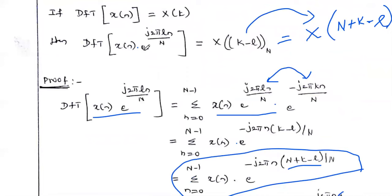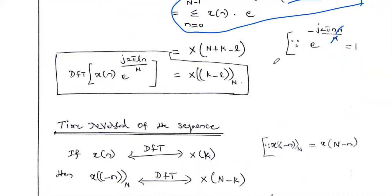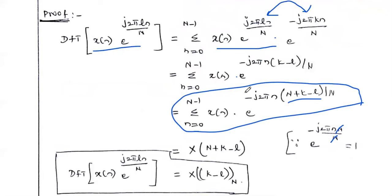So any sequence x(n) multiplied by e^(j2πLn/N) has a DFT answer that is the original DFT X(K) shifted by amount L in a circular manner — called the circular frequency shifting property. In this video, we discussed two properties: circular time shifting and circular frequency shifting. In the next video, we will discuss the remaining two properties: time reversal and complex conjugate property of the DFT. Thanks for watching and keep watching.